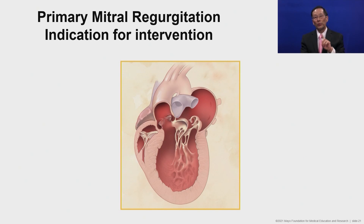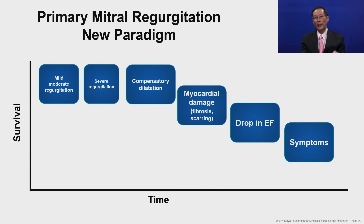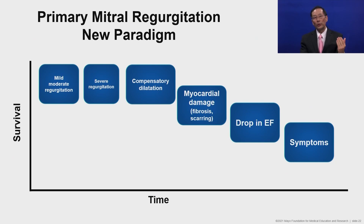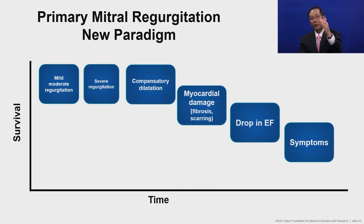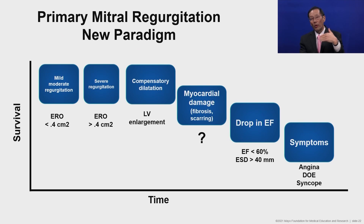Turning now to primary mitral regurgitation — disease of the valve itself — a similar paradigm shift applies. Starting with mild to moderate regurgitation that becomes severe: instead of compensatory hypertrophy, mitral regurgitation being a volume overload produces compensatory dilatation. Myocardial damage follows, then a drop in ejection fraction, then symptoms — with each step, survival gets lower. An effective regurgitant orifice greater than 0.4 cm² is a good cutoff to determine whether there is enough volume overload to cause a problem.